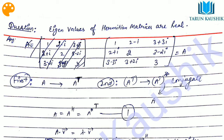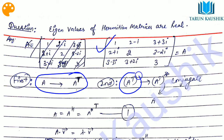First of all, we must know what a Hermitian matrix is and what its property is. I am solving this question by taking an example. This is a matrix A. For calculating the Hermitian of a matrix, we first calculate the transpose, then take the conjugate of that. If we do that, the conjugate of the transpose gives us back our original matrix.